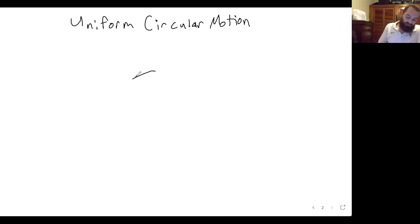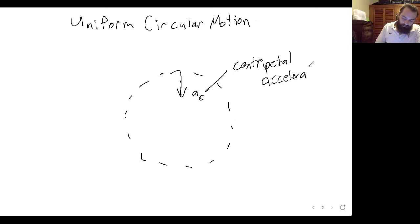And so for uniform circular motion, like we had with the earth going around the sun, the acceleration that points towards the center of its orbit is called the centripetal acceleration. And in uniform circular motion, the centripetal acceleration is related to the tangential velocity, which is the velocity that points perpendicular to the centripetal acceleration, like this: v_t squared over r, where r is the radius of this circular orbit.